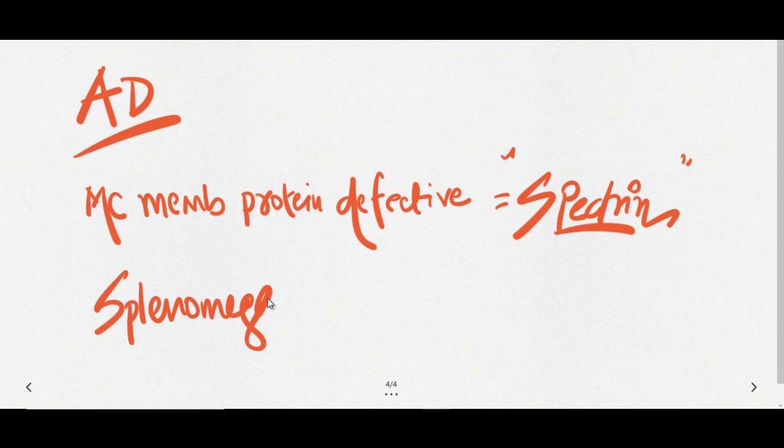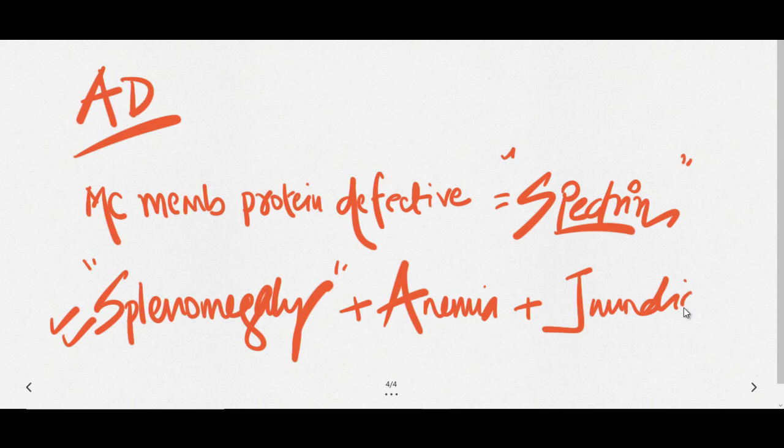In spherocytosis, the spleen will be enlarged because it has to deal with lots of worn and torn RBCs, so there will be splenomegaly. There will be anemia due to lysis of RBCs and hemolytic jaundice. Splenomegaly, anemia, and jaundice are all seen in hereditary spherocytosis.